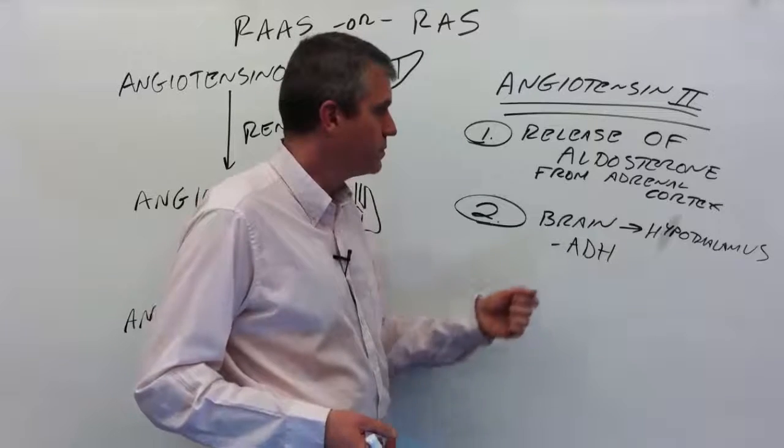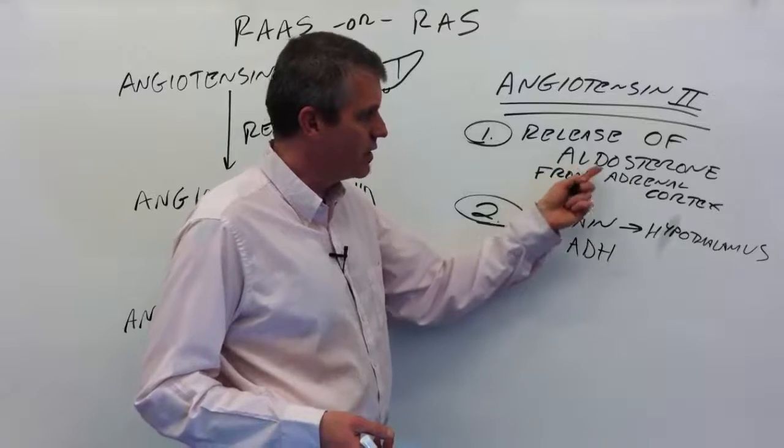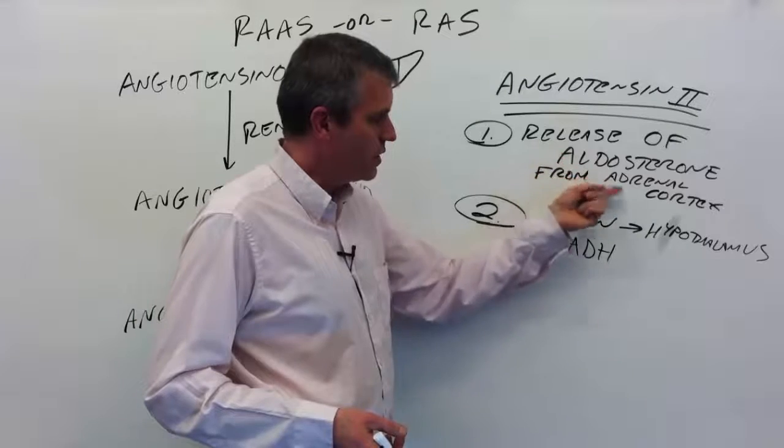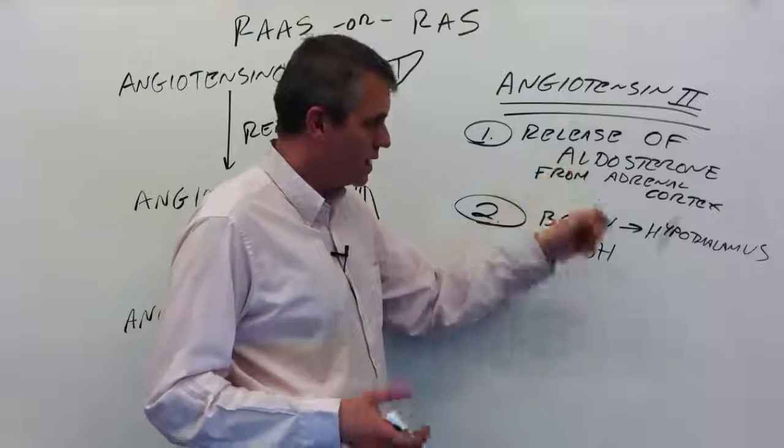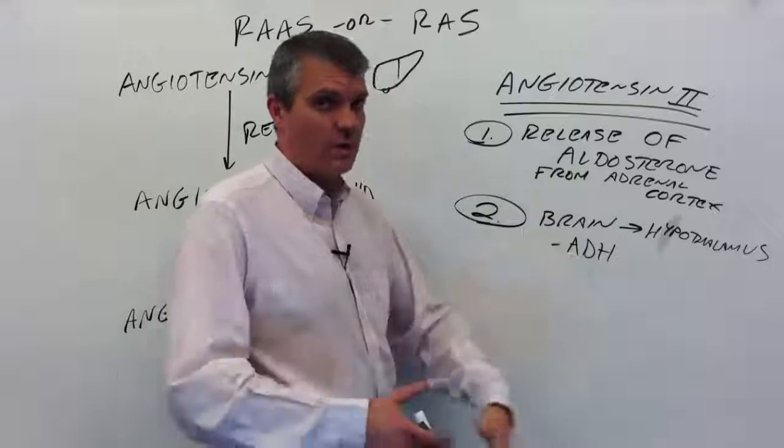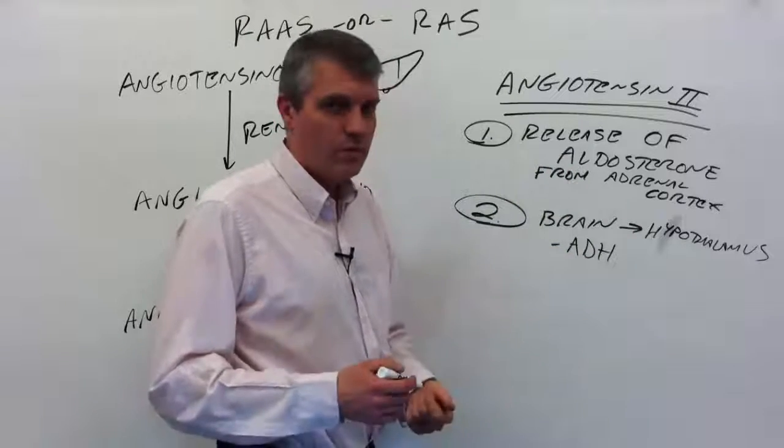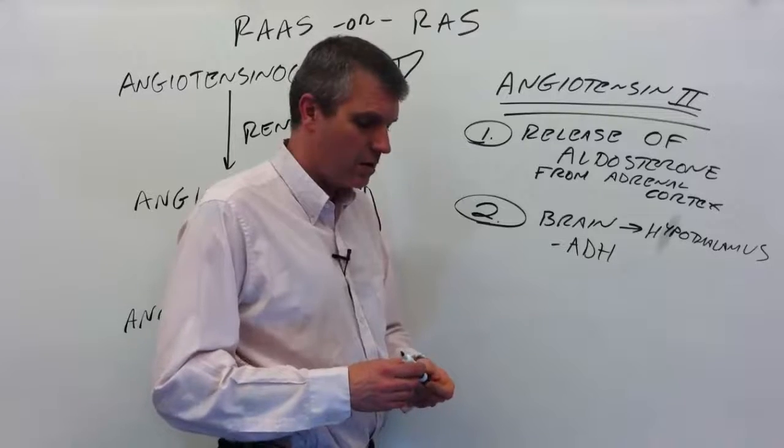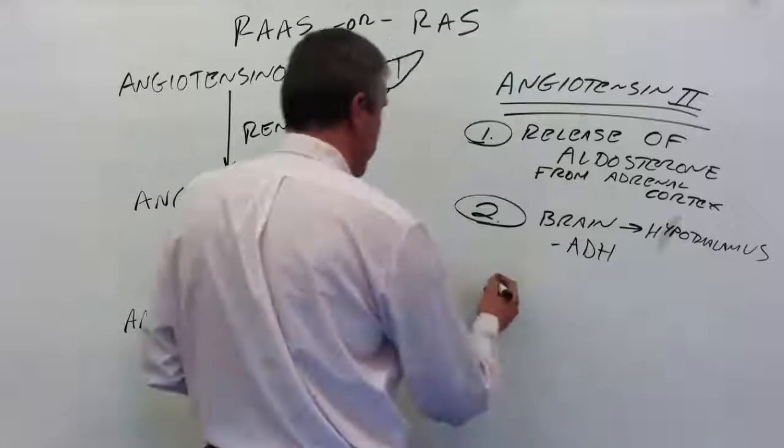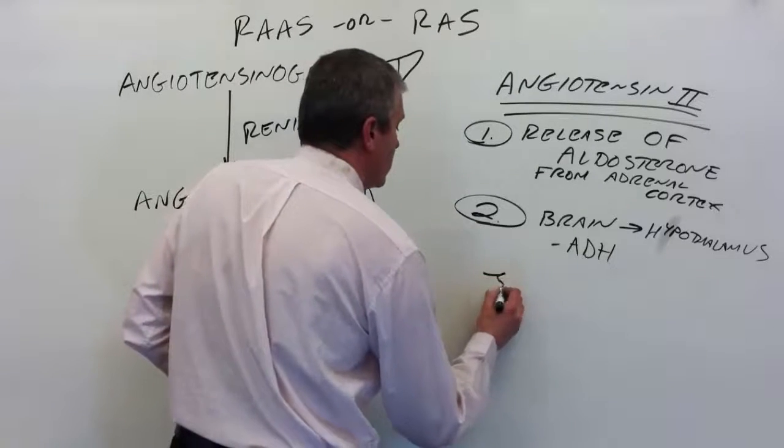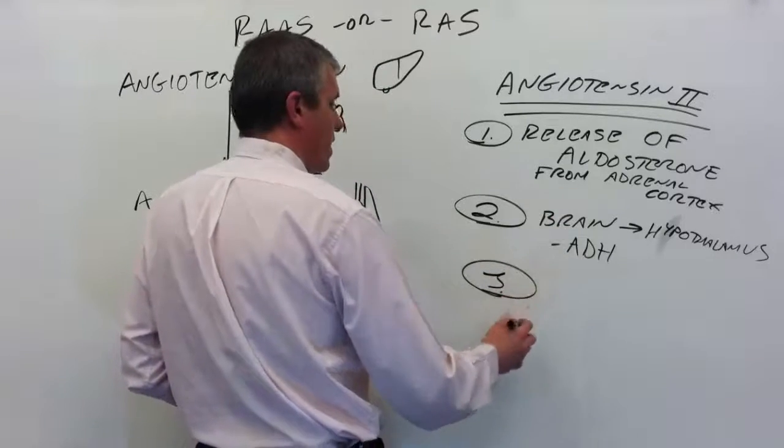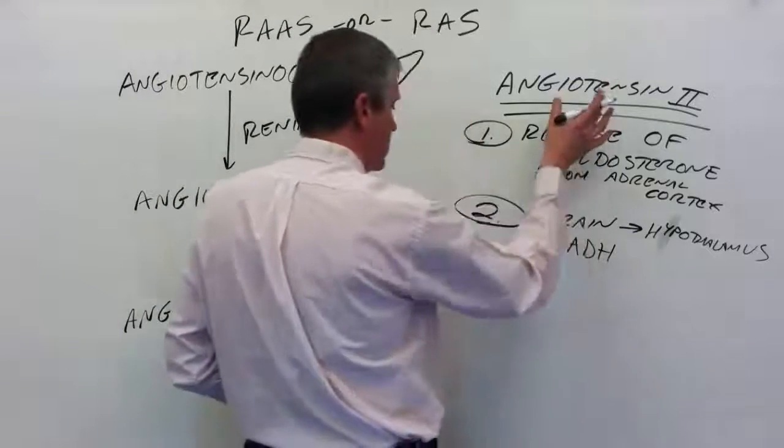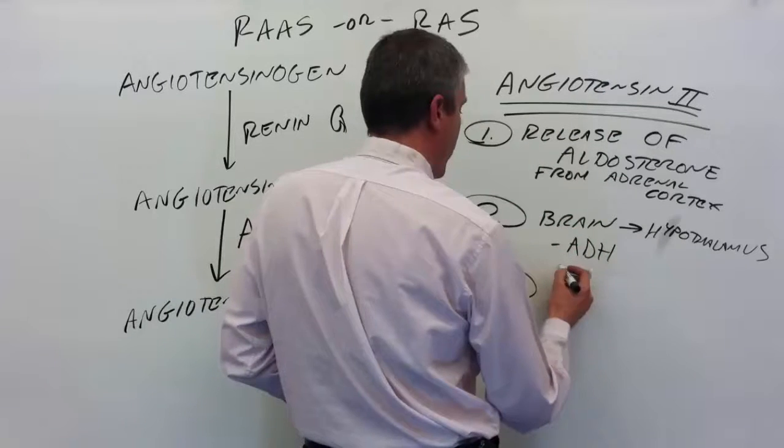Combine that with conserving sodium, which is what aldosterone causes us to do—conserving sodium, keeping more sodium in the body, conserving water, keeping more water in the body. Those two together especially increase blood volume. But it's not enough to just keep the water and sodium we have. Another thing angiotensin II does at the brain is stimulate the thirst center.